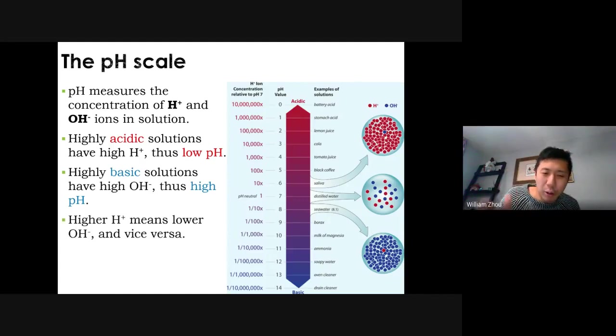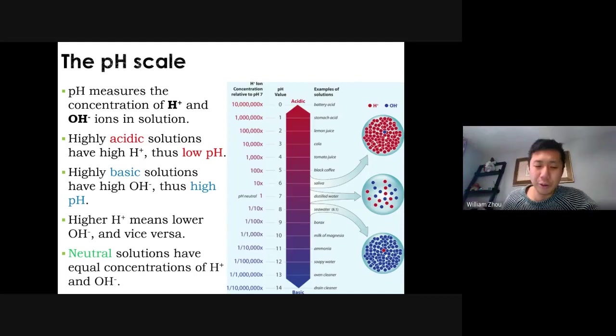pH of 1 is your stomach acid. That is 1 million times higher than pure water. Lemon juice pH 2 is 100,000 times and then 10,000, 1,000. So this goes down by orders of magnitude. That means it goes down by 10. Every difference in the pH is the difference of 10 times. So the lower the pH, the more hydrogen ions you have. At neutral, you have equal amounts of hydrogen and hydroxide. These two are antagonistic. If you have higher hydrogen, you will have lower hydroxide.